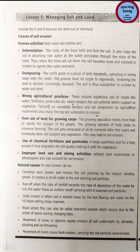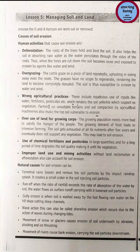Next cause is overuse of land for growing crops. The growing population needs more food, leading to intensive farming. The soil gets exhausted of all its nutrients after a few years and eventually does not support any vegetation, which may lead to soil erosion. Use of chemical fertilizers and pesticides in large quantities and for a long period degrades soil quality, making it unfit for vegetation. Improper land use and mining activities without land reclamation or afforestation can also account for soil erosion.